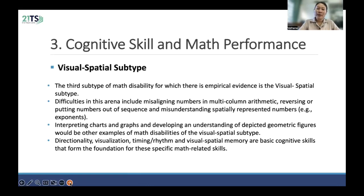Let's move to the third subtype, the visual-spatial subtype. The third subtype of math disability for which there is empirical evidence is the visual-spatial subtype. Difficulties in this area include misaligning numbers in multi-column arithmetic, referencing or reproducing numbers in a sequence, and misunderstanding spatial representations of numbers, for example when writing exponents. Directionality, visualization, and the visual-spatial aspects of memory are the basic cognitive skills that form the foundation for this specific math skill.